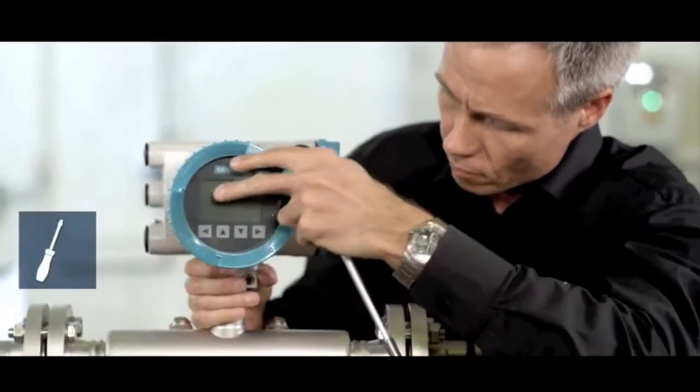In compact configuration, the transmitter can be rotated horizontally. To do this, simply loosen the lock screw.